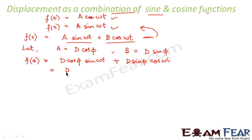we can write f(t) as D cos φ sin ωt plus D sin φ cos ωt. So, we can take D common.